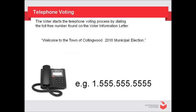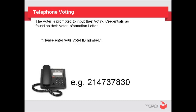The voter starts the telephone voting process by dialing the toll-free number found on the voter information letter. The voter will be prompted to input their voting credentials, starting with their voter ID number as found on their voter information letter.